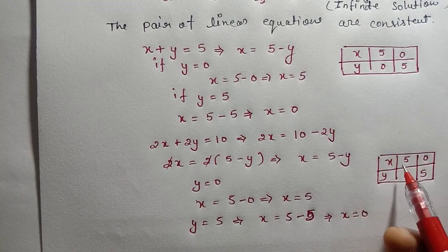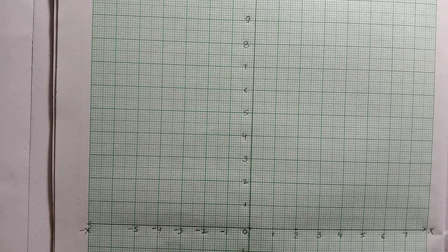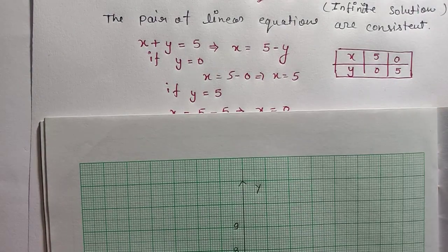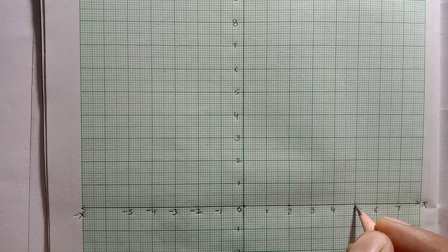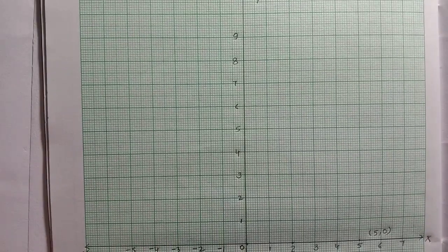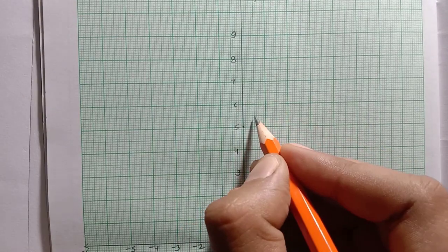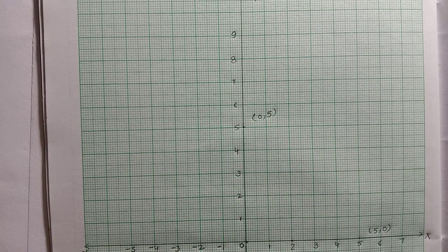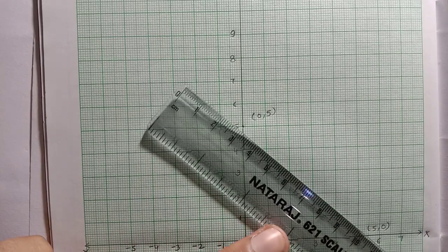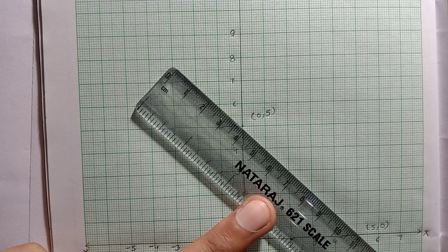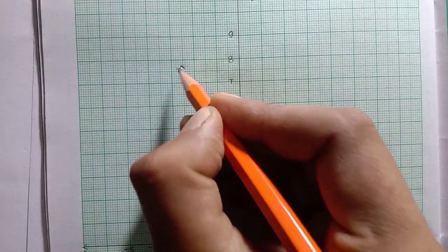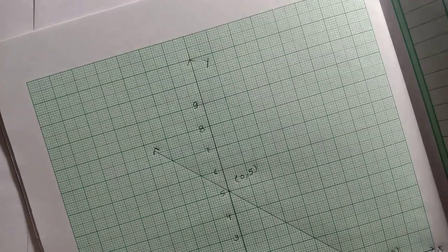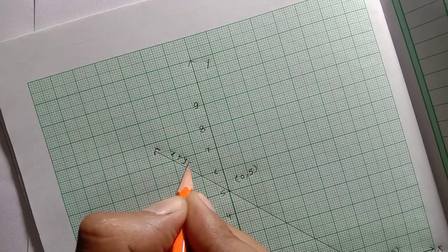अब यह दो जो हमारे points आ गए हैं दोनों equations के, हम इन्हें graph पे plot करेंगे. First equation के points हैं: (5, 0) और (0, 5). x equals to 5 and y equals to 0 — this point is (5, 0). x equals to 0 and y equals to 5 — this point is (0, 5). हम इन दोनों points को join कर देंगे. यह first equation x plus y equals to 5 की line draw हो गई.